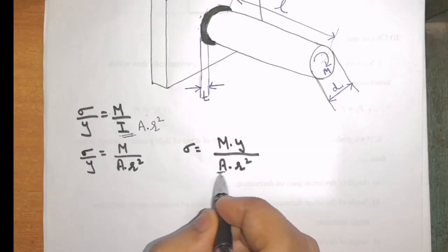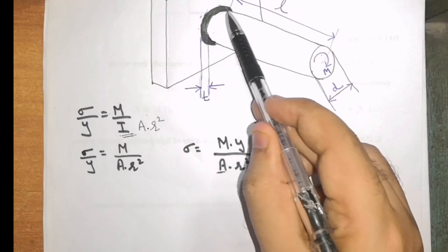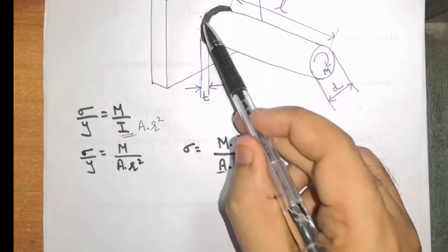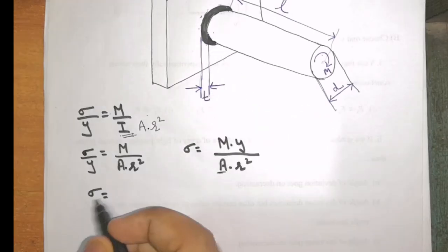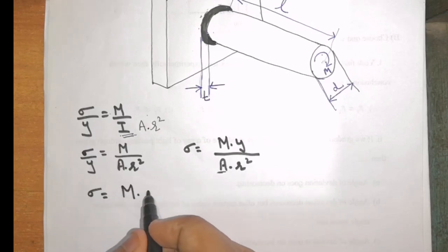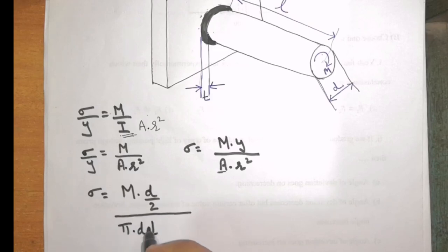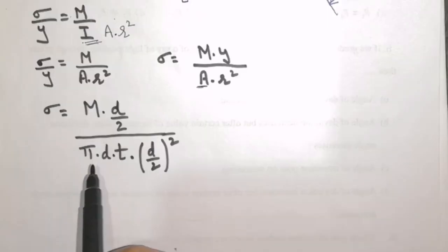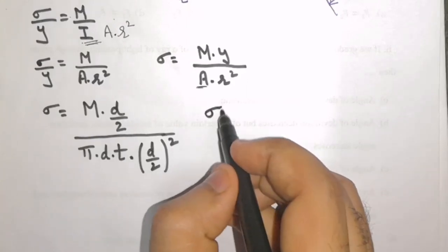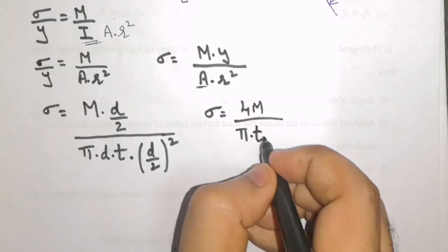This area is the area of the weld. From the figure we can see that the area of the weld will be pi D — that is, the circumference of this weld — multiplied by the thickness T. So sigma is equal to M into y, where y is the distance of the outermost fiber, which is D by 2 or radius, divided by area pi D T multiplied by R squared, where R is again D by 2. On solving this expression, I will get sigma is equal to 4M divided by pi into T into D square.